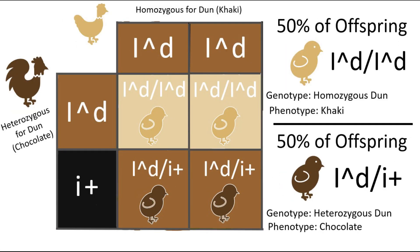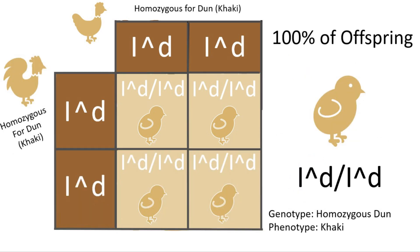The fifth pairing is a homozygous Dunn or khaki bred to a heterozygous Dunn or chocolate. In this pairing, 50% of offspring should be khaki or homozygous Dunn, and 50% should be heterozygous Dunn or chocolate.